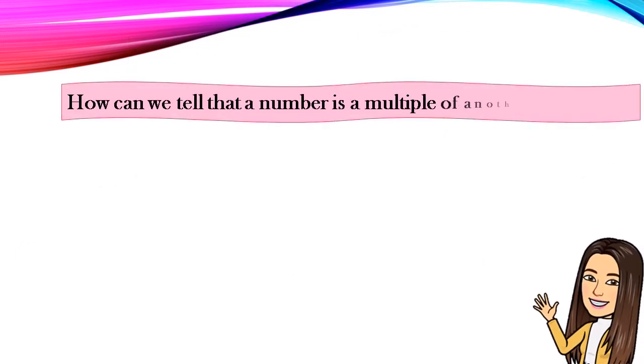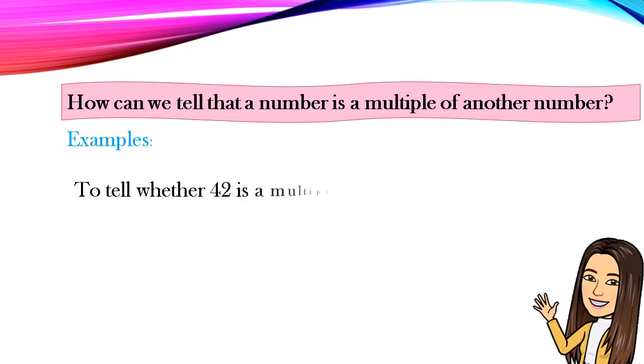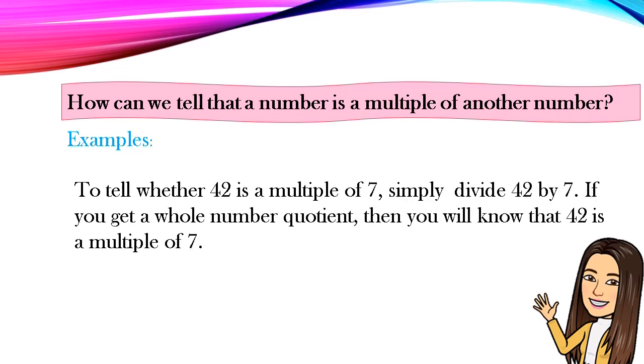How can we tell that a number is a multiple of another number? Examples: To tell whether 42 is a multiple of 7, simply divide 42 by 7. If you get a whole number quotient, then you will know that 42 is a multiple of 7. Since 42 divided by 7 equals 6, 42 is a multiple of 7.